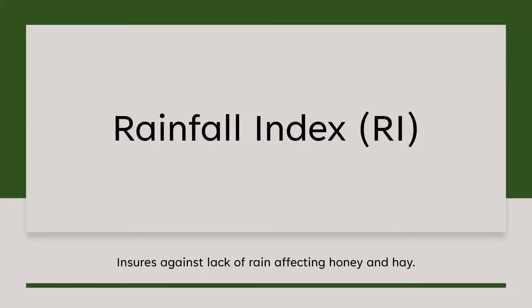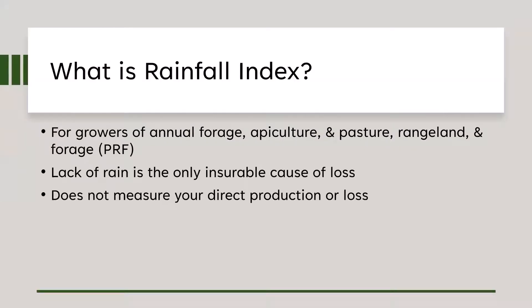The next program, also from the USDA RMA, is the Rainfall Index. This program insures against lack of rain, but only for annual forage — hay, pasture, and rangeland — and also apiculture, meaning honey. You're not looking at yields or revenue from those; you're simply looking at lack of rain. It doesn't require a natural disaster — it's only triggered by insufficient rainfall.